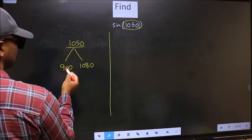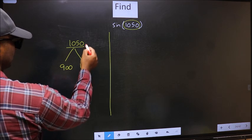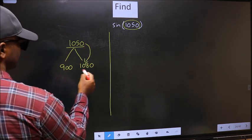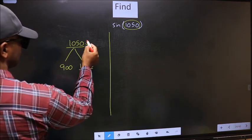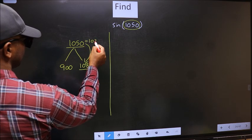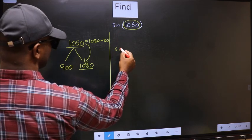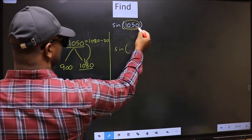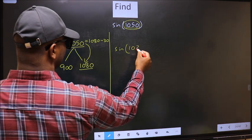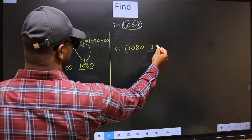Now 1050 is close to which number? This is close to 1080. So 1050 should be written as 1080 - 30. So this will become sin. In place of 1050 we write 1080 - 30.